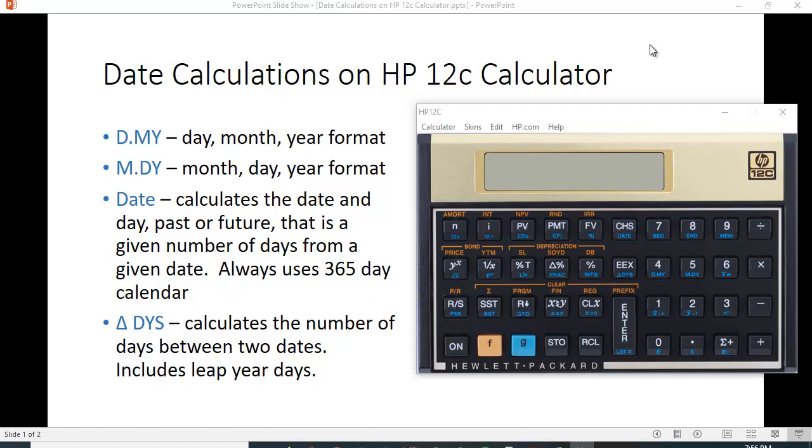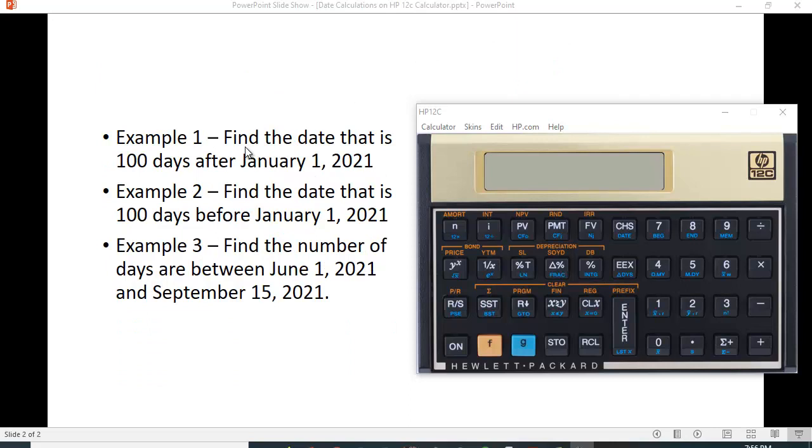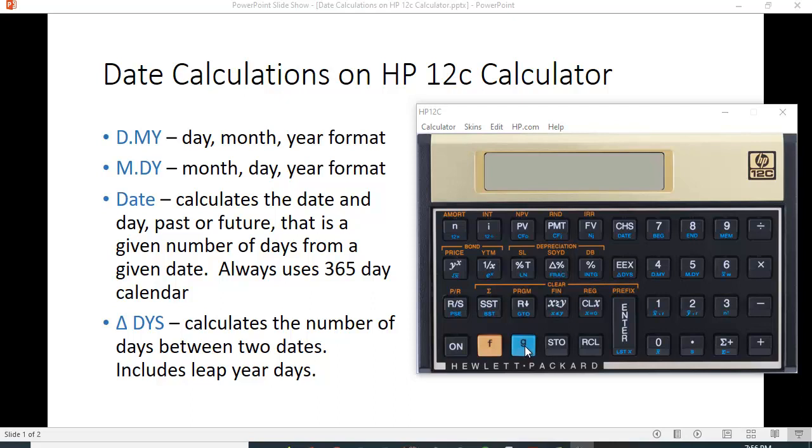So here are some of the keys. Under the number 4 key, and you have to hit this light blue G function key, it says D.MY. That's the day.month.year format. So you're going to type in the day, and then a dot, and then the month and the year.